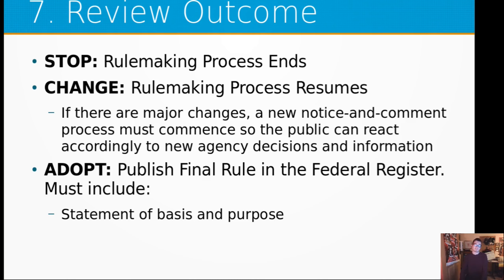Step seven is the review outcome. There are three events that can happen: Stop — the rulemaking process ends and it does not become a law. Change — the rulemaking process resumes, but if there are major changes, a new notice and comment process must commence so the public can react to the new agency decisions, which resets the process back to step five. Adopt — publish the final rule in the Federal Register, which must include a statement of basis and purpose, all information as to why this is allowed, site-specific law, et cetera.